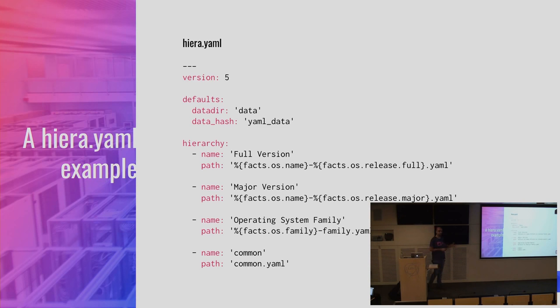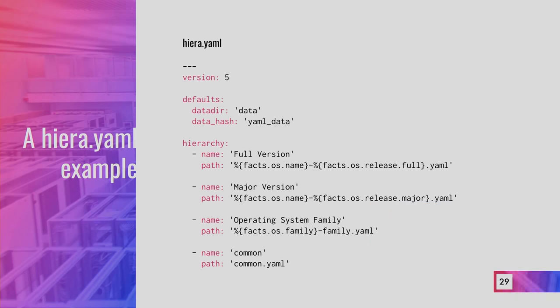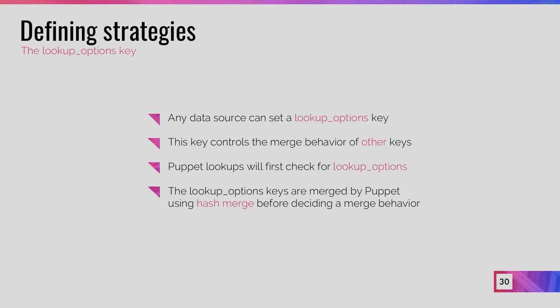An example of this file can be found in the NTP module. You specify version 5, define that all hierarchy files are inside the data directory within the code directory (forgetting the old data directory), specify the built-in YAML backend, and define a hierarchy with four elements using interpolation — for example using facts to get the hostname — making it dynamic. Inside those hierarchy files you define all the values to set. This is a good place to define class defaults instead of the old 'params.pp' pattern.